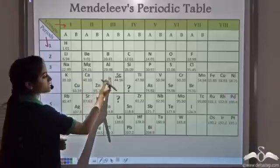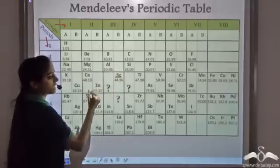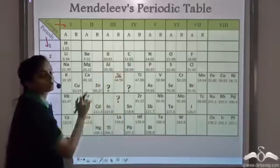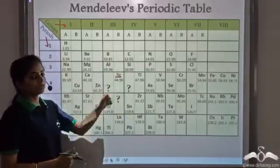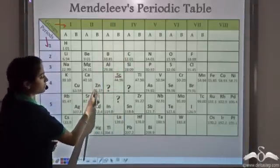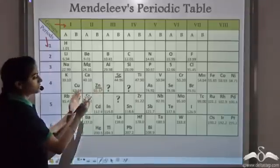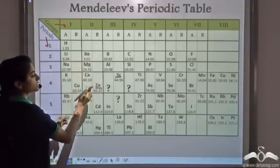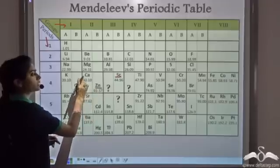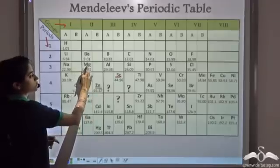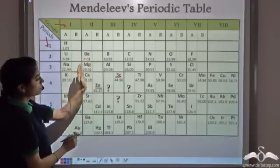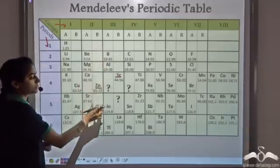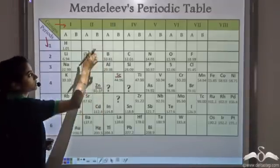So he placed scandium slightly towards the right of boron and aluminium in a separate group, which he called group B. He did that for other elements as well. Whenever he reached any element such that its properties were not similar to elements before it — for example zinc, magnesium, and beryllium were neither similar to boron and aluminium — so he placed them in a different group, group B.